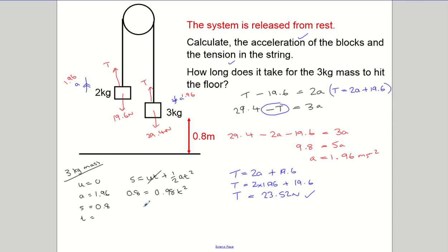Dividing both sides by 0.98 gives t² ≈ 0.816, so t = √0.816 ≈ 0.904 seconds to 3 significant figures. That covers most questions involving ropes and pulleys in first-year mechanics: one object on a table being pulled by a falling one, or two hanging masses. The method is always the same - do a force analysis on both objects including weight and tension, apply F = ma to get two equations, substitute one into the other to find a, then find T.